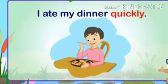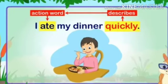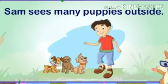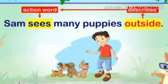What is an adverb? See this sentence: I ate my dinner quickly. Here, 'quickly' describes the action word 'ate.' Another example: Sam sees many puppies outside. Here, 'outside' describes the action word 'sees.'